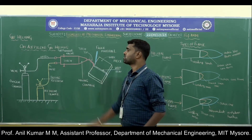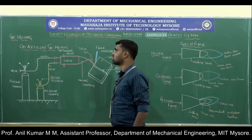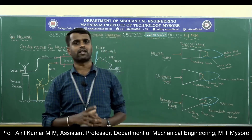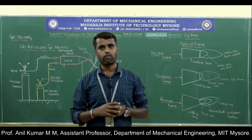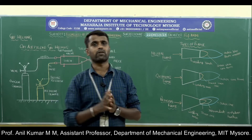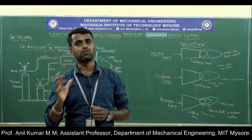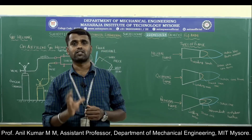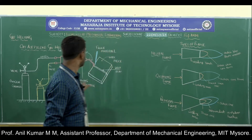We will discuss the working principle of the oxy-acetylene welding process. A suitable proportion of oxygen and acetylene gas is supplied into the welding torch, where both gases mix well and are supplied through the torch tip. When ignited, the oxy-acetylene flame is produced. Using this flame to perform welding is called the oxy-acetylene welding process.